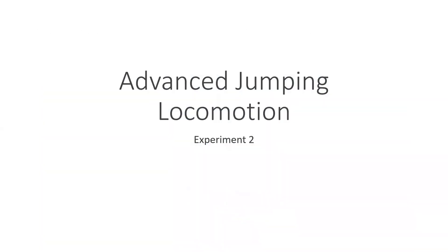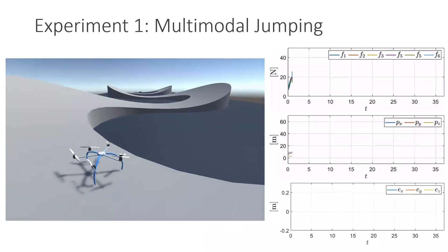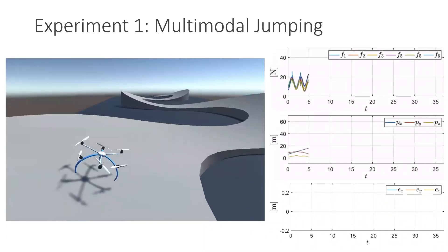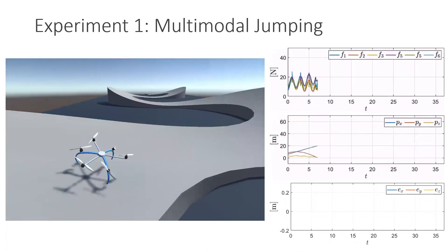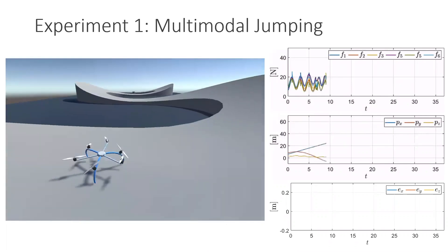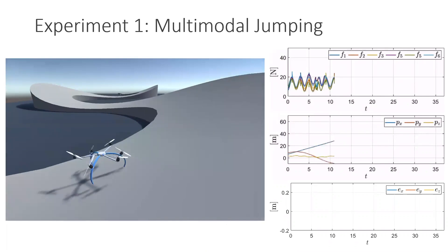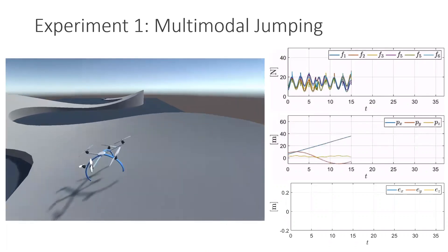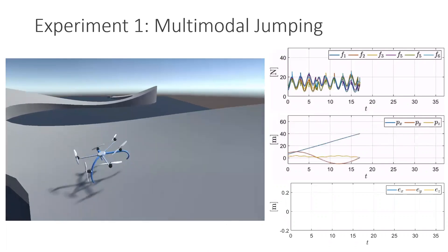In the second experiment, we conducted a more complex jumping locomotion on a half-pipe trajectory. It becomes obvious that the position and attitude error remain small, and the desired actuation forces of the propeller remain positive and inside the physical limits. We would like to point out again that the multimodality of the locomotion is significantly more energy-efficient than conventional flying.